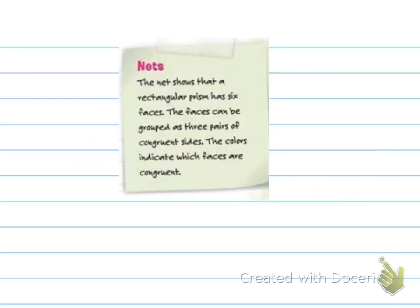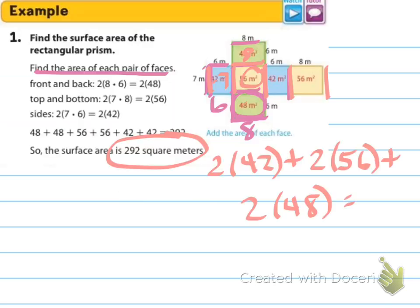The net shows that a rectangular prism has six faces, and the faces can be grouped as three pairs of congruent sides. The colors indicate which faces are congruent — these two are the same, these two are the same, and these two are the same.